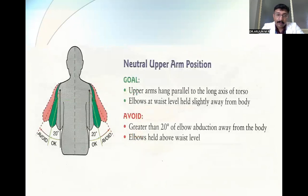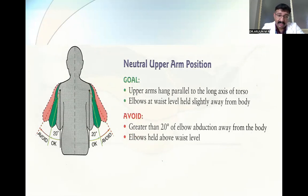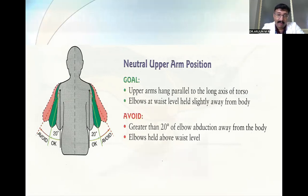Coming to the arm position. The basic goal is upper arms and hands parallel to the long axis of the torso. Elbows at waist level, held slightly away from the body. Things to avoid: greater than 20 degrees of elbow abduction away from the body, and elbows above waist level. These things have to be avoided.